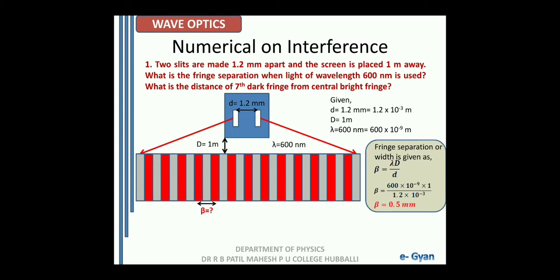The second question is to find the distance of the 7th dark fringe from the central bright fringe. From the central bright fringe we count: first dark, second dark, third, fourth, fifth, sixth, and seventh. The path difference for the central bright fringe is 0, which corresponds to n = 0. For the first dark fringe adjacent to the central bright, the path difference is n + ½ × lambda, and since it is only lambda/2, n = 0 for the first dark.